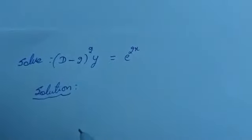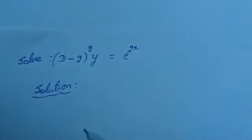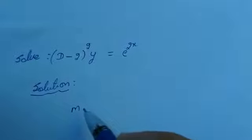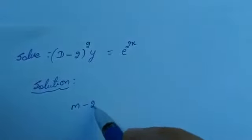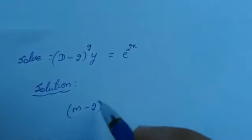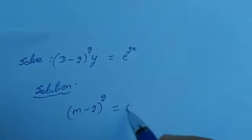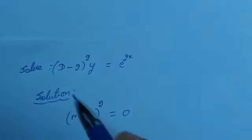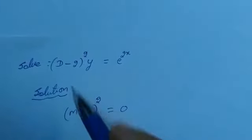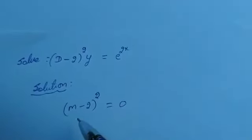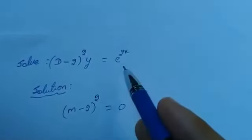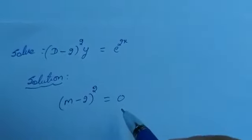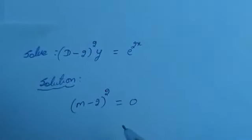First, to find the complementary function, we need the auxiliary equation. The auxiliary equation is (m minus 2) whole square equal to 0. That means in the place of D, we are replacing with m. On the right hand side, we replace e raised to 2x with 0. This is the auxiliary equation.